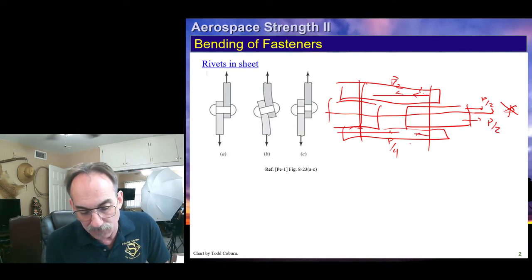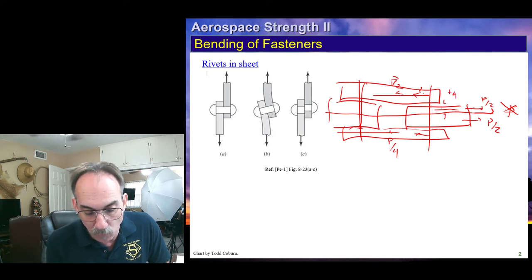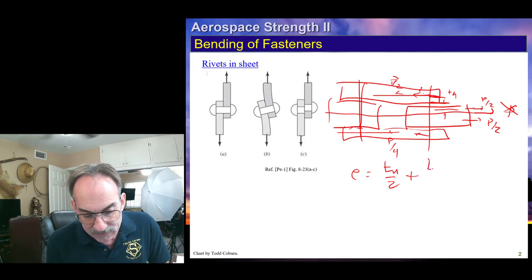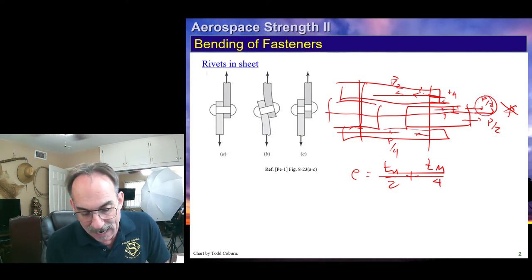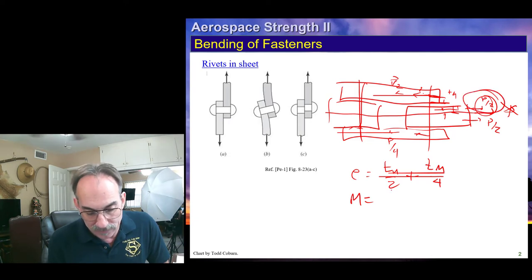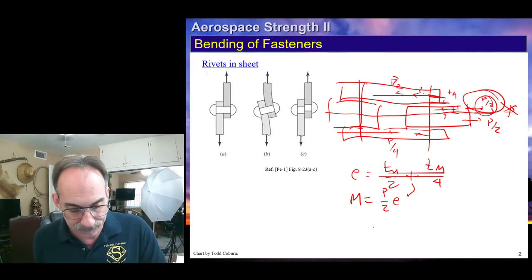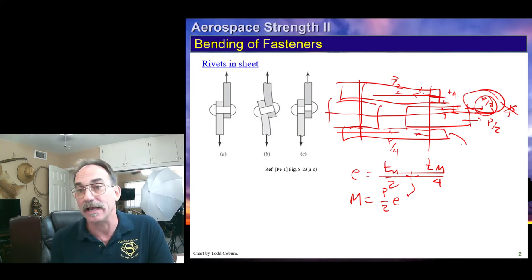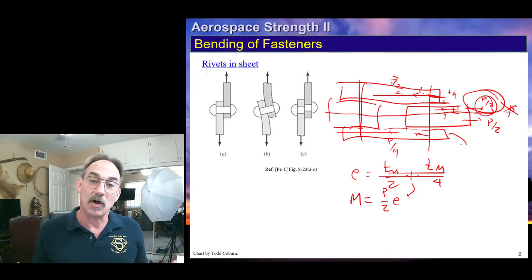If we imagine this force here, half of it's carried up here and half down here, and this is reacted as P over 2 here and P over 2 down here. This P over 2 is running down at half of this, so this is T over 2 over 2, which is actually T over 4. So our eccentricity now is the thickness of the upper plate divided by 2, plus the thickness of the middle plate divided by 4. Our moment is now the force, which is P over 2 going to the upper plate, times the eccentricity. We can do the same thing for the lower plate and check it, and whichever one has a smaller margin of safety would be critical.